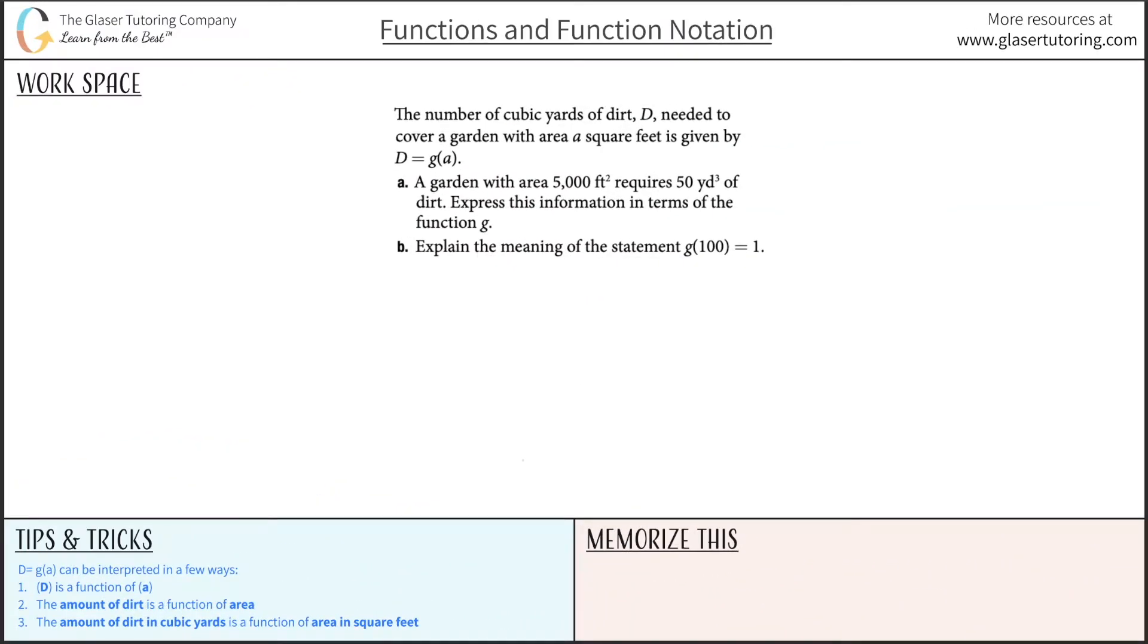The number of cubic yards of dirt d needed to cover a garden with area a square feet is given by d = g(a). A garden with area 5,000 square feet requires 50 cubic yards of dirt. Express this information in terms of the function g.